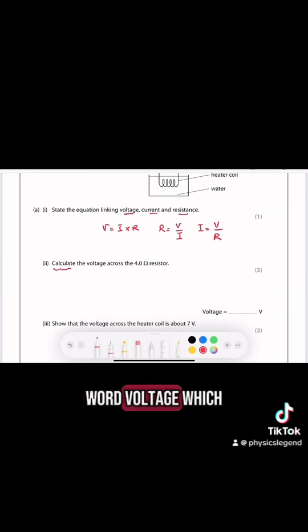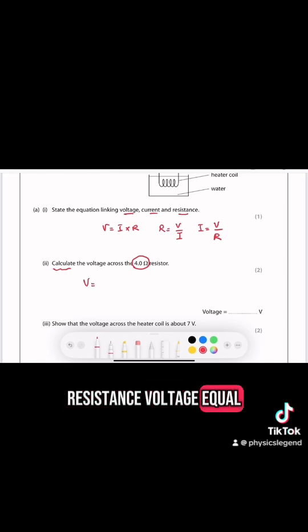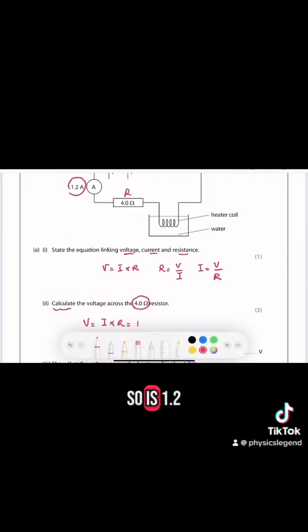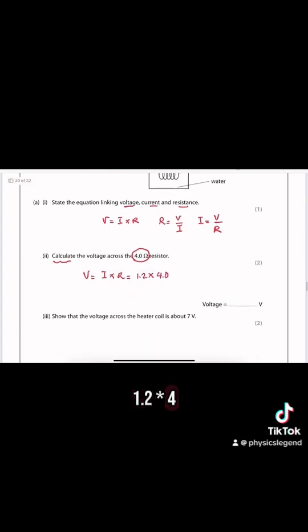Calculate the voltage across the 4 ohm resistor. Voltage equals I times R. The electric current in the diagram is 1.2 ampere, so it's 1.2 times the value of resistance which is 4. 1.2 times 4.